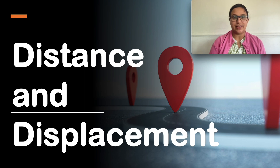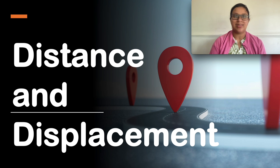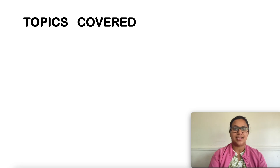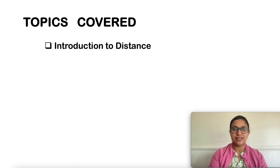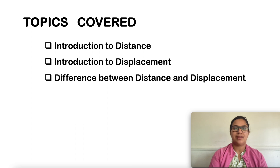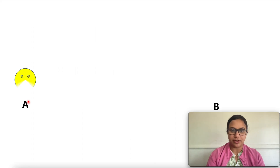Hello students, welcome back to JJ's Physics Class. Today we are going to study about distance and displacement. In the last class we learned about motion. The simplest type of motion is motion along a straight line, or one-dimensional motion. Let us learn to describe this kind of motion by various examples. The topics covered during the session are: introduction to distance and displacement, and the difference between distance and displacement.